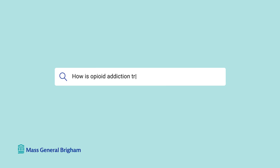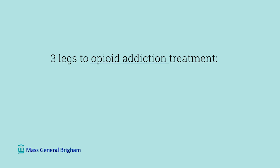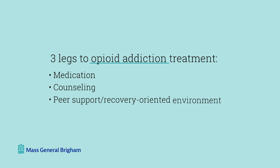How is opioid addiction treated? Opioid addiction treatment is like a three-legged stool. The three legs are treating the biology using medications, treating the psychology through counseling, and finally the social aspect, which is creating a recovery-oriented environment.